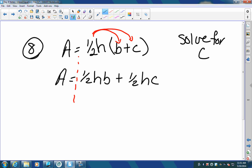We're trying to get C by itself right here. So I need to move this one over to the right. So I need to subtract one half H B from each side. So I'm going to have A minus, whoops, this one's not so friendly. A minus one half H B equals one half H C.